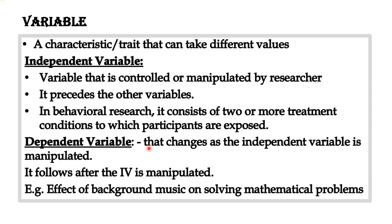The dependent variable is the variable that changes as the independent variable is manipulated. By changing the independent variable, we observe the effect on the dependent variable. The dependent variable depends on the independent variable — it follows after the independent variable is manipulated. If there is no independent variable, there will be no change in the dependent variable.